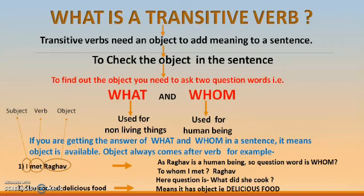If I say 'she cooked,' it's not a complete sentence. So — 'she cooked delicious food.' Delicious food is the object and 'cooked' is the verb.